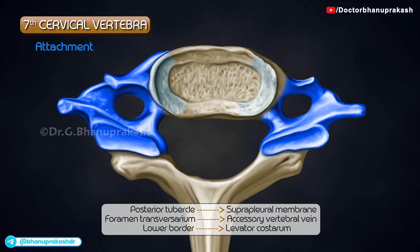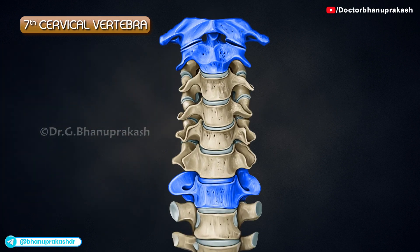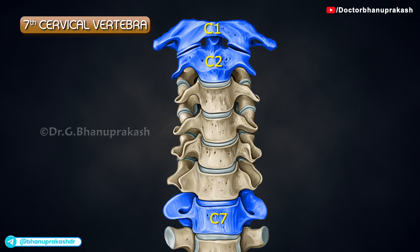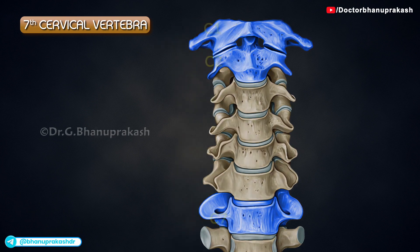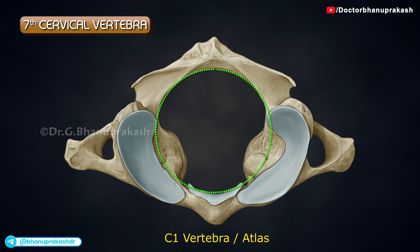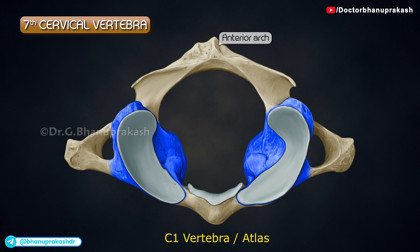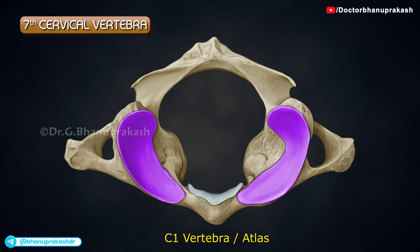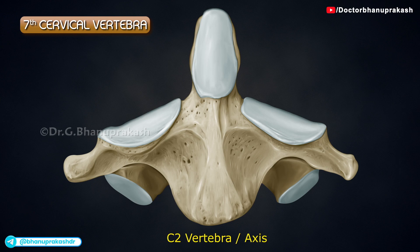The lower border of the transverse process provides attachment to levator costarum. The three atypical cervical vertebrae — C1, C2, and C7 — have distinct characteristic features. The C1 vertebra, or atlas, is a ring-like, kidney-shaped bone lacking a spinous process or body, consisting of two lateral masses connected by anterior and posterior arches; its concave superior articular facets receive the occipital condyles. The C2 vertebra, or axis, has a peg-like dense odontoid process that projects superiorly from its body.